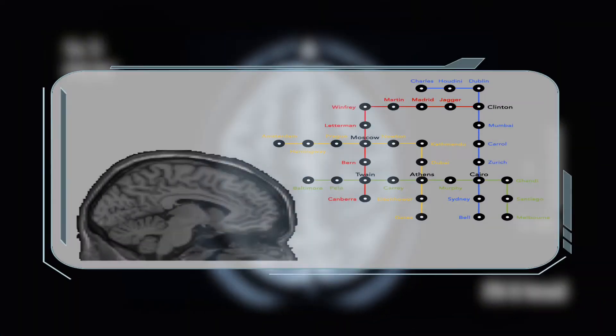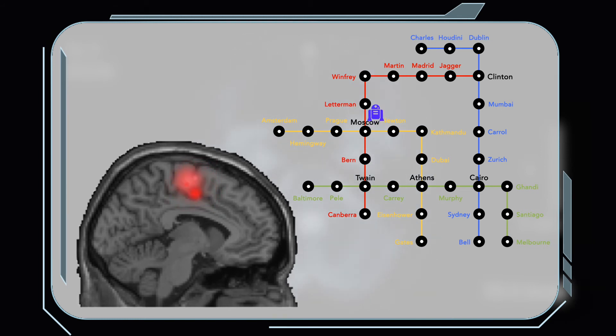We then asked whether the DMPFC might also be encoding the actual context in which participants currently were, which would correspond to a hierarchical representation. We moved to a multivariate technique called RSA, or Representational Similarity Analysis, which allows us to see how consistent the pattern of activity in the DMPFC was for each of the lines or contexts in the subway. For example, if you're in the red line, the pattern was very consistent, but then when participants switched to the blue line, the pattern would suddenly switch as well. In this way, we know that information about the line is encoded in this region.